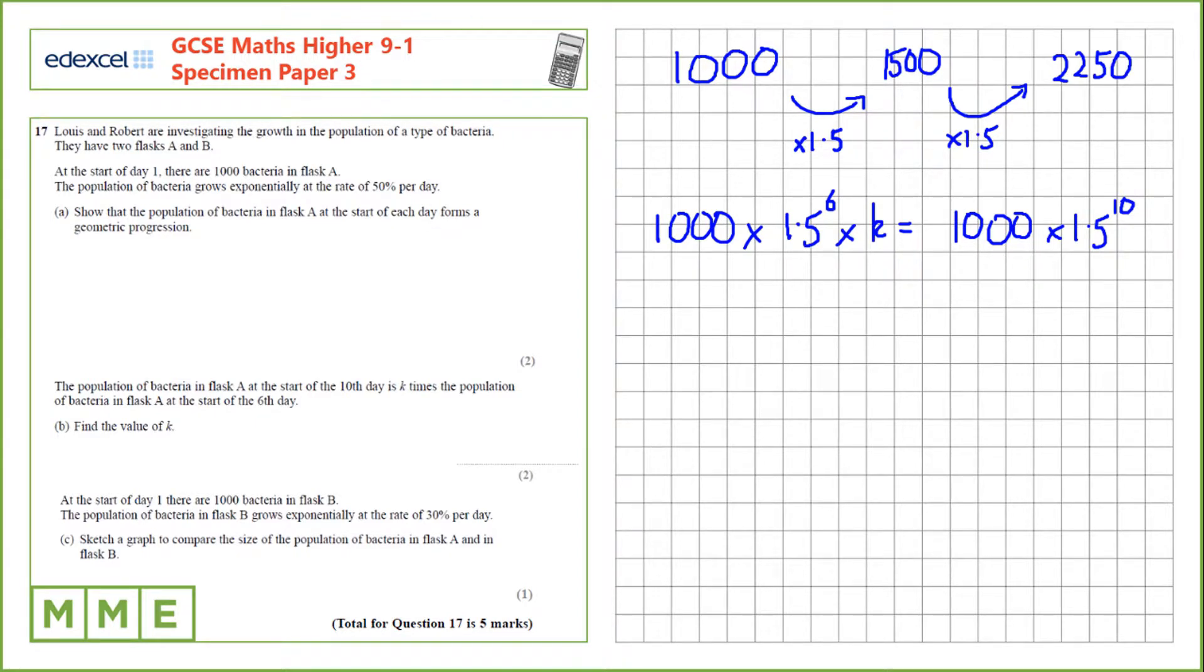Now let's do some rearrangements. We have a thousand on both sides which we can cancel out giving us 1.5 to the power of 6 times k equals 1.5 to the power of 10. If you want k we can divide by 1.5 to the power of 6 which is 1.5 to the power of 10 over 1.5 to the power of 6 which is 1.5 to the power of 4. We can calculate this value which gives us 81 over 16.